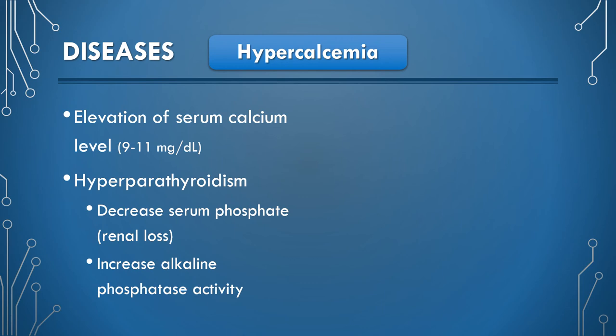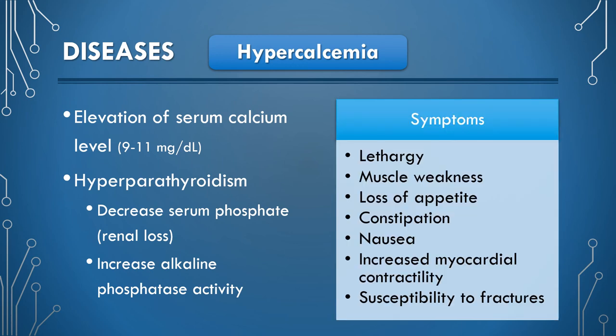Elevation in urinary excretion of calcium and phosphorus often resulting in the formation of urinary calculi is also observed. The symptoms of hypercalcemia include lethargy, muscle weakness, loss of appetite, constipation, increased myocardial contractility, and susceptibility to fractures.